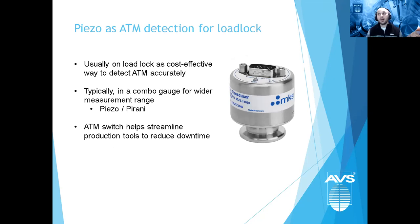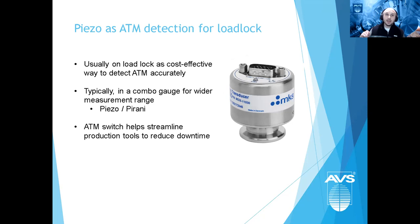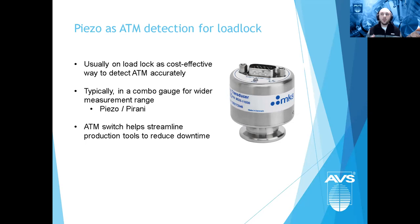A piezo gauge is also useful for load-lock atmospheric detection. On a load lock, where you're transferring a sample into a process chamber, the piezo's low cost and fast response automate the process — confirming true atmospheric pressure — to streamline production in high-throughput tools and reduce downtime.